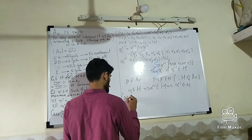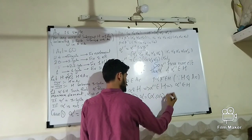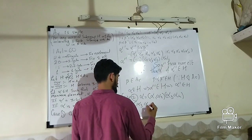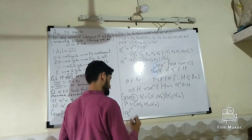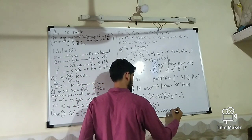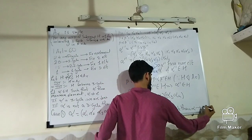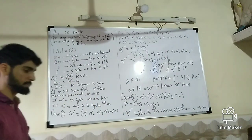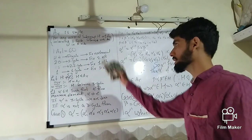Similarly for Case 2, alpha is of the form (α1 α2)(α3 α4). The same beta = (α3 α4 α5) will work, and we construct a new alpha-dash which fixes more elements, again giving a contradiction. So the only possibility left is that alpha is a 3-cycle, which fixes the maximum number of elements and lies inside H. By our key lemma, H equals A5, which proves that A5 is simple.